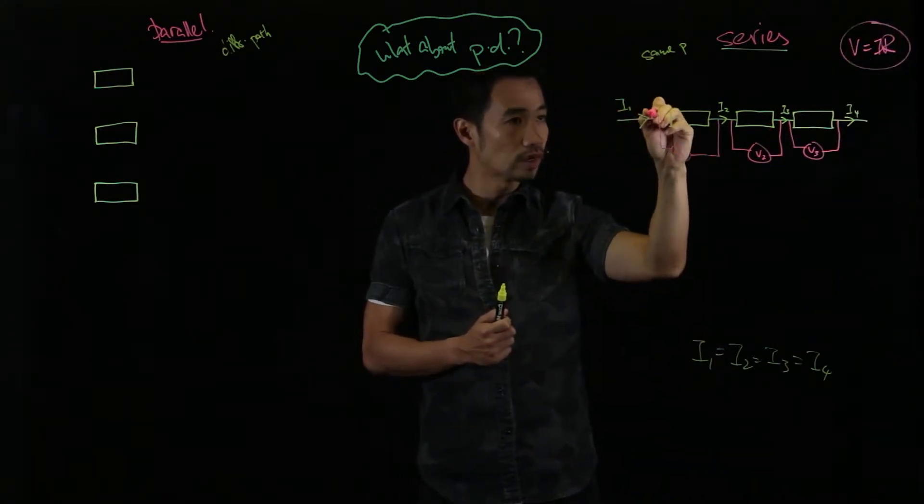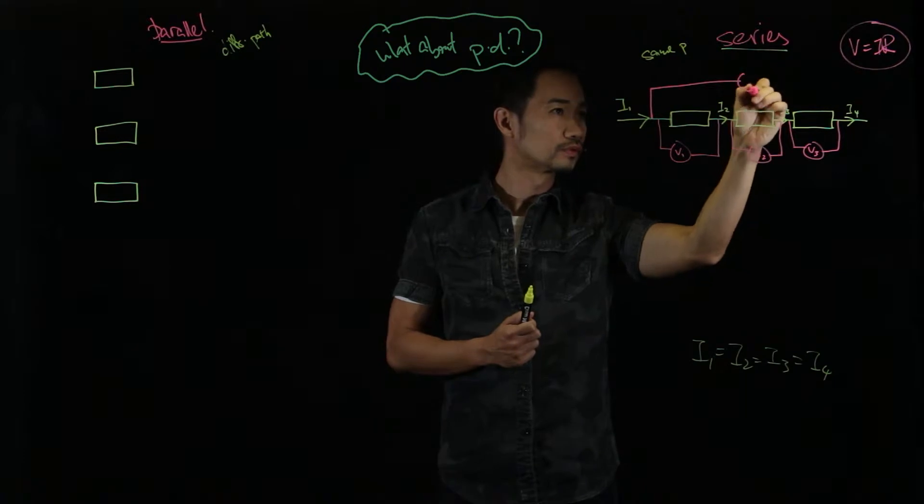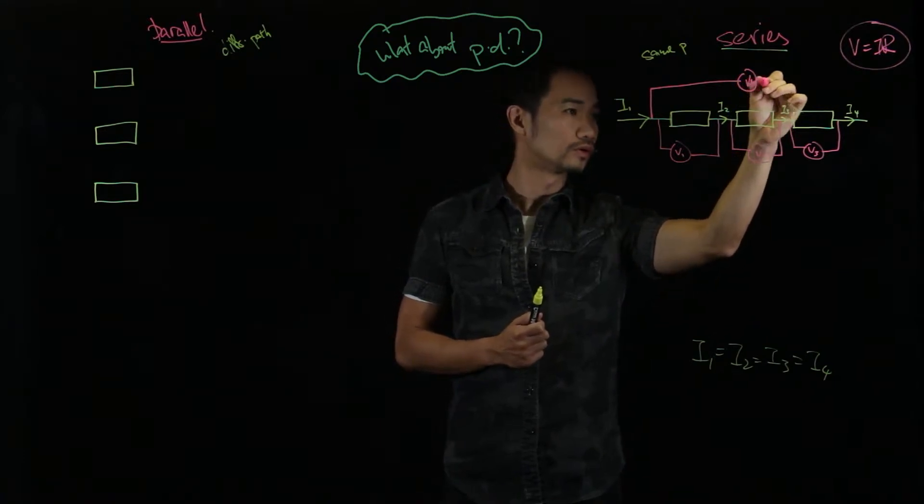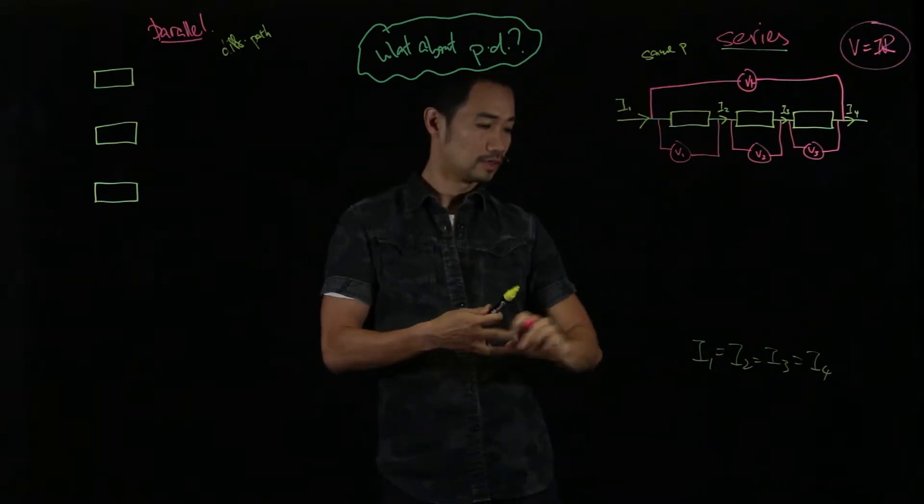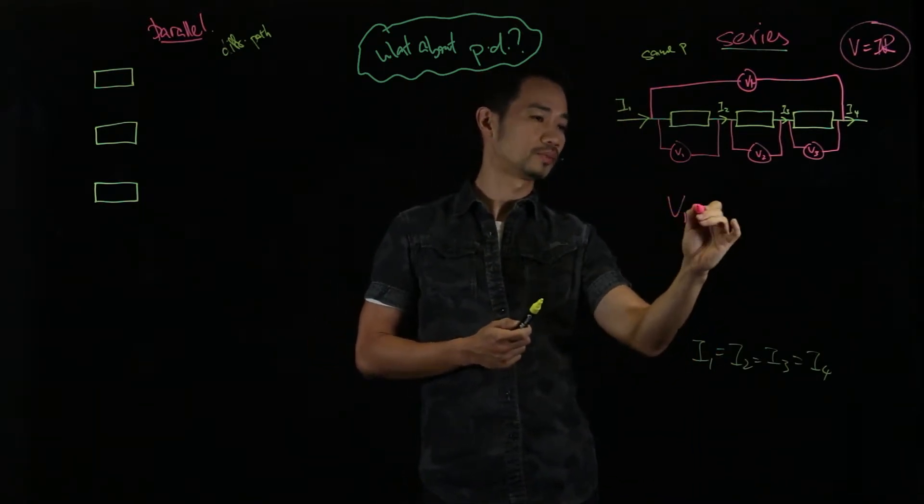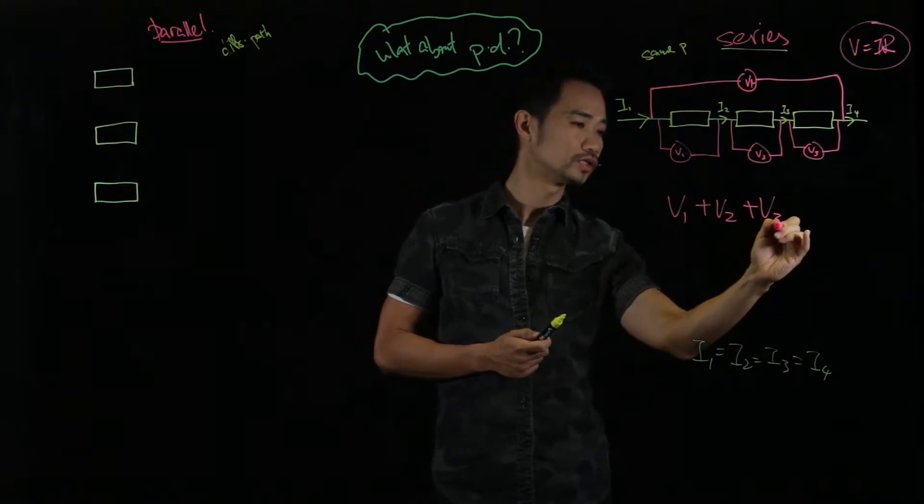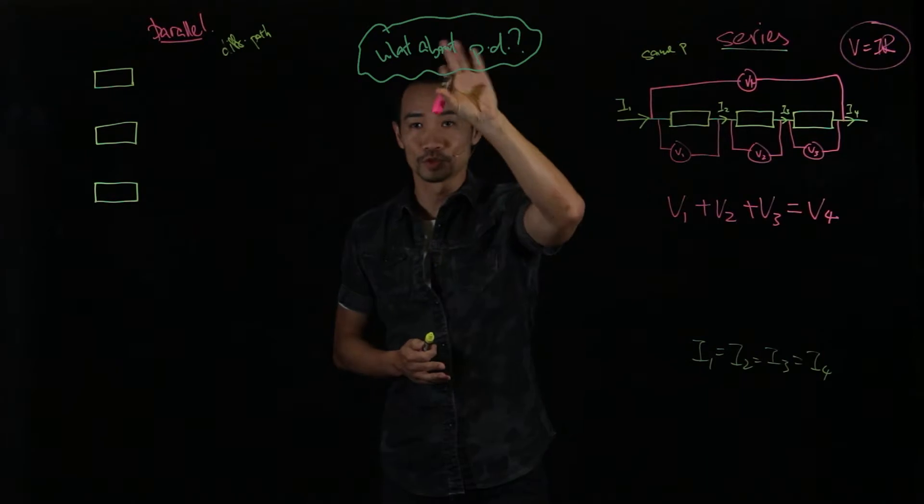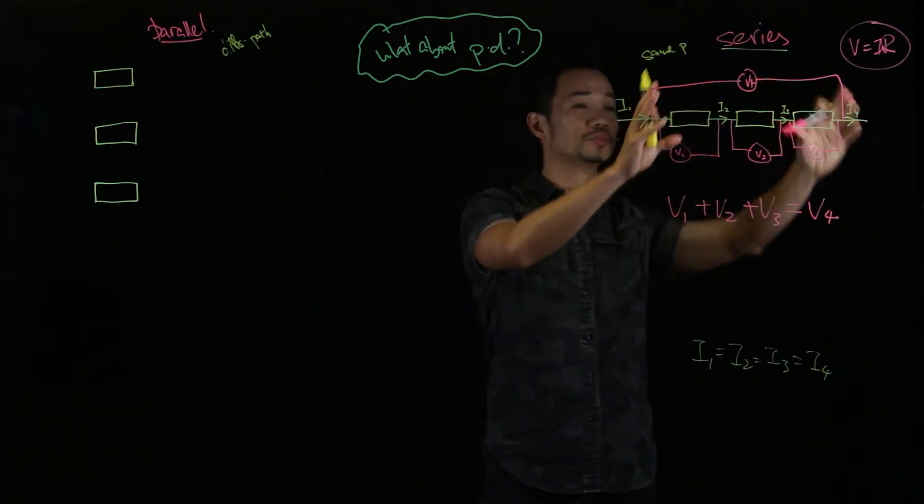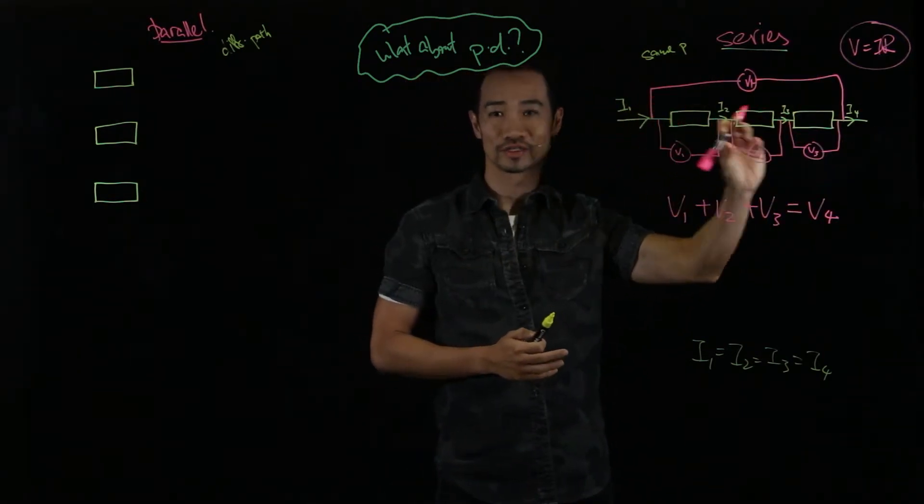But if I were to connect an overarching voltmeter here, V4, that cuts across, that goes across all three resistors. V1 plus V2 plus V3 is equal to V4. That is how potential difference behaves in resistors connected in series.